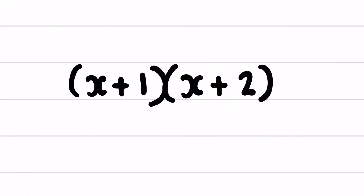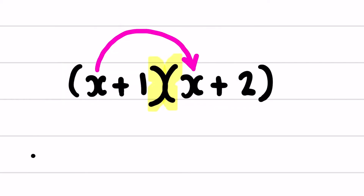So if we look at the first example of (x + 1)(x + 2), I know they are being multiplied together because the two brackets are touching each other. I'm going to color code it so you can see where everything is coming from. First times first: x times x gives me x squared.